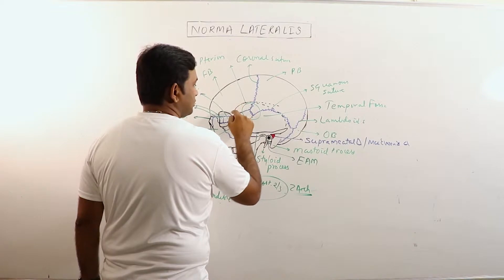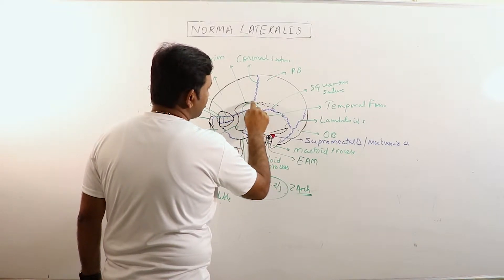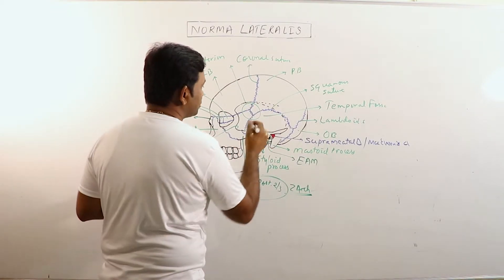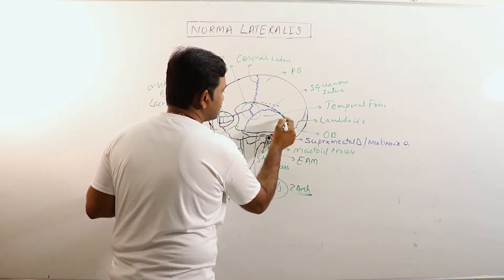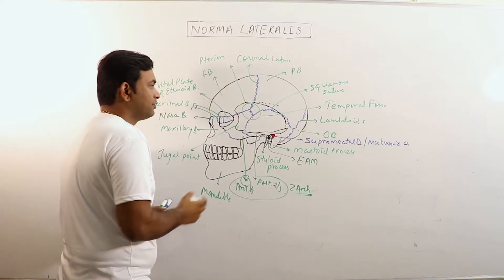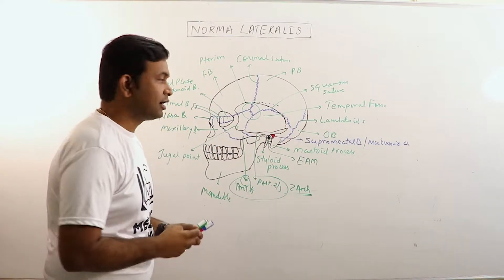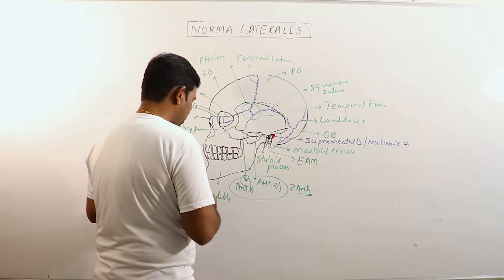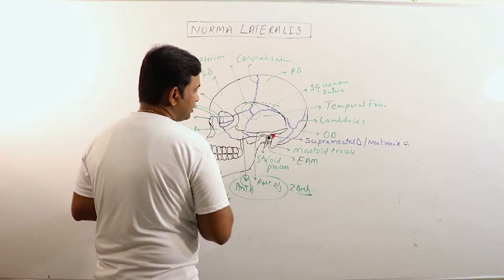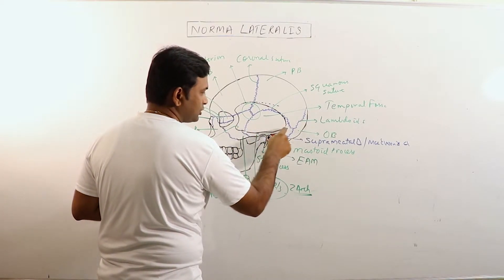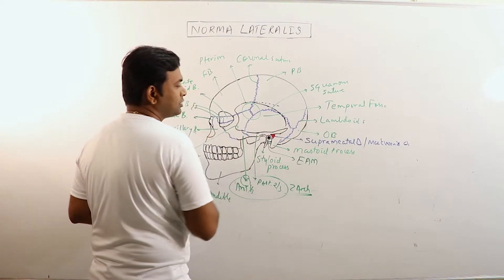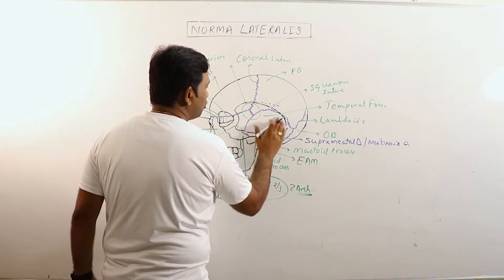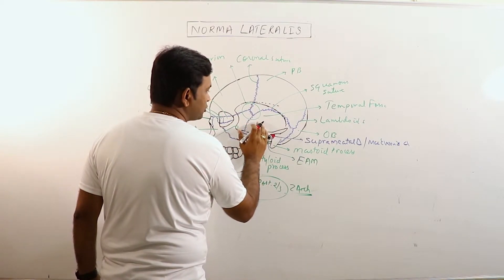The temporal line crosses the coronal suture and divides into the superior and inferior temporal lines. The superior temporal line fades away, but the inferior temporal line continues towards the zygomatic arch, forming the upper boundary. The lower boundary is formed by the superior border of the zygomatic arch.